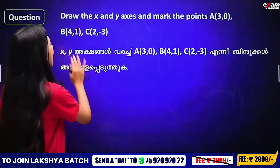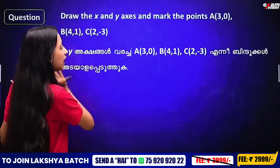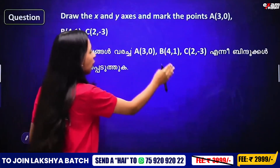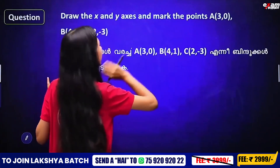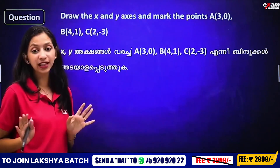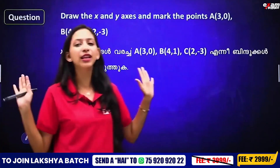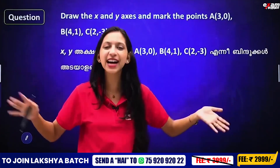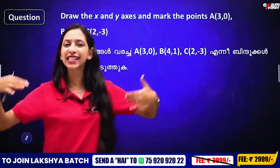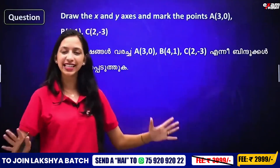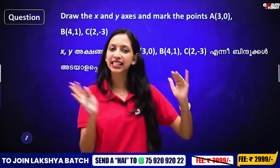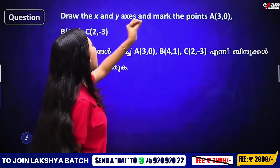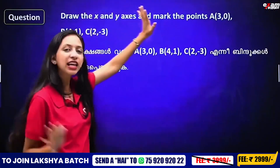In this case, the xy-axis points are (3, 0), (4, 1), and (2, minus 3). We can draw the figure using a scale and pencil. Then read the answer sheet — use the x-axis and y-axis. These points we can mark as required.